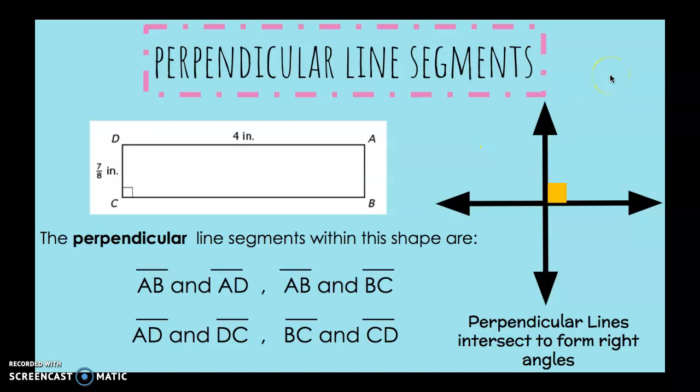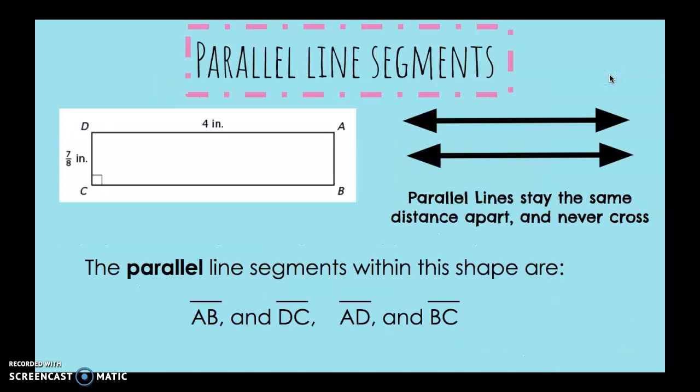Let's look at the next question. Parallel line segments. Parallel lines stay the same distance apart, and they never ever cross. The parallel line segments within this shape are AB and DC and AD and BC.